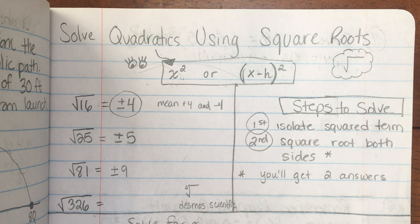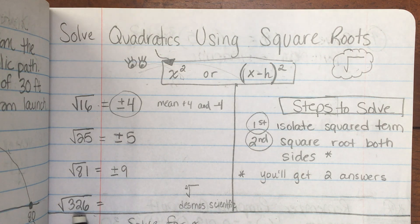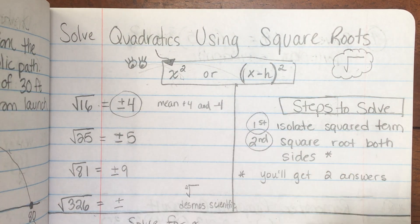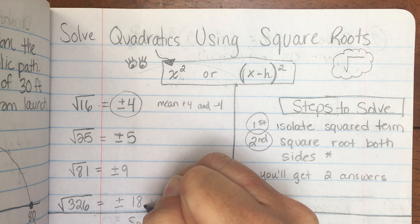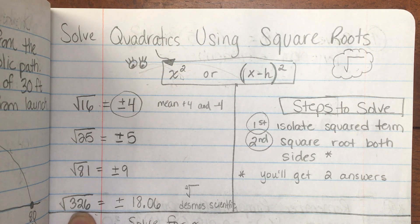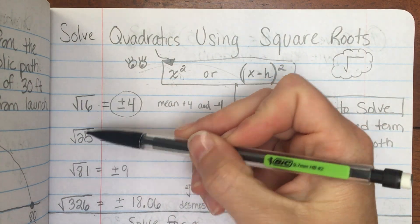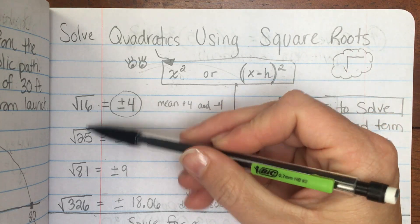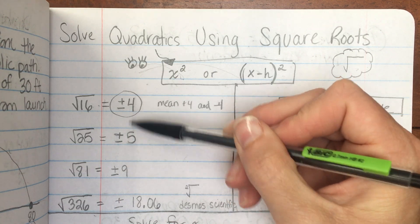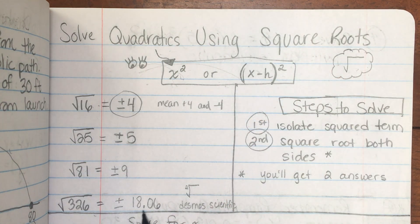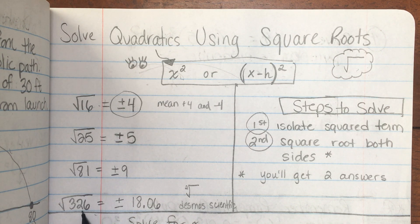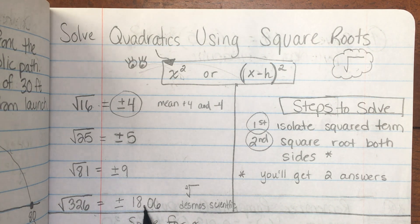The square root of 326 would be a positive and a negative 18.06. That means 326 is not a perfect square, where 81, 25, and 16, those are considered perfect squares because their square root numbers are whole numbers or integers. And 18.06 has a decimal involved. So this is not a perfect square, but we can still square root it using a calculator.